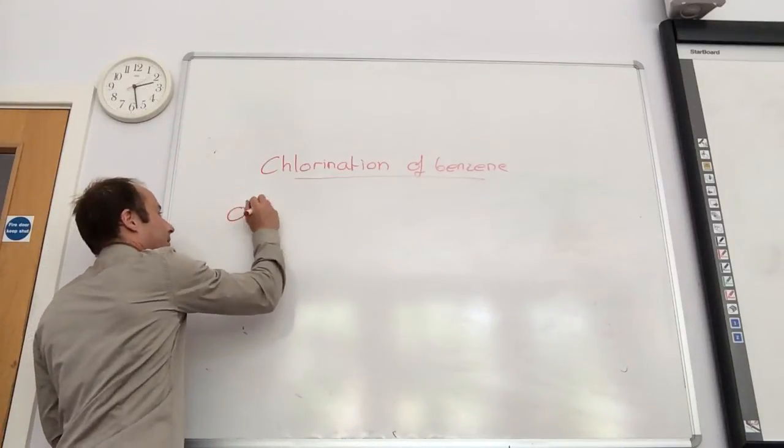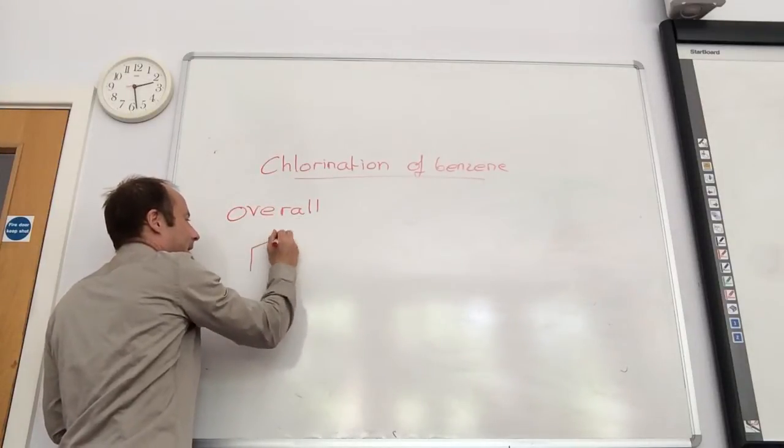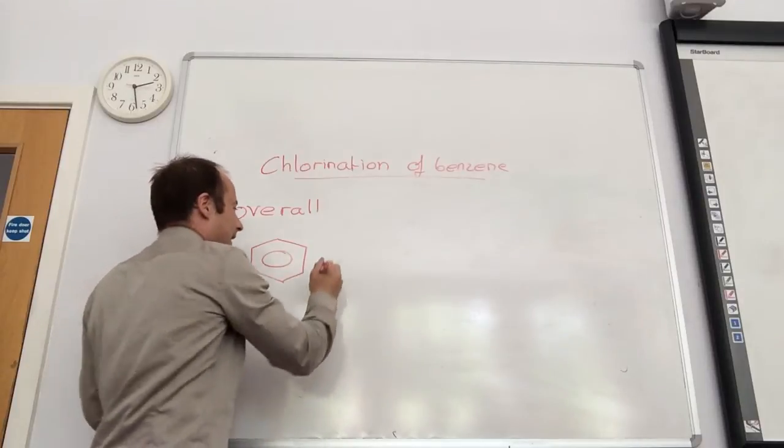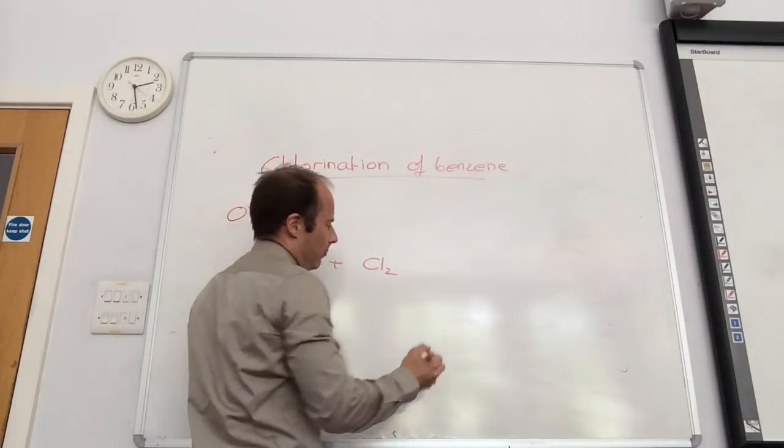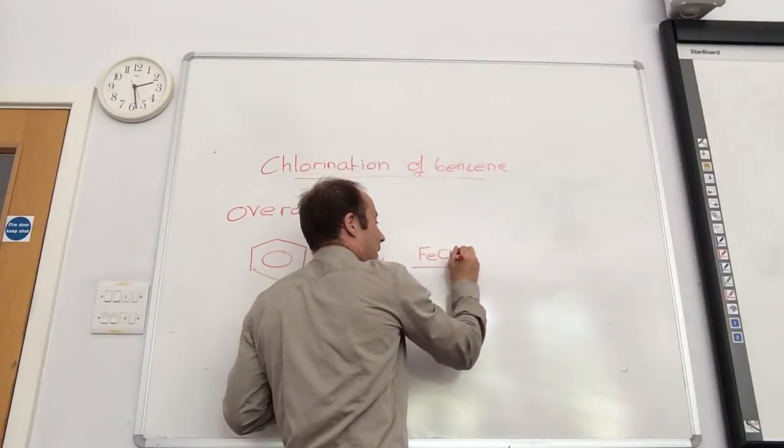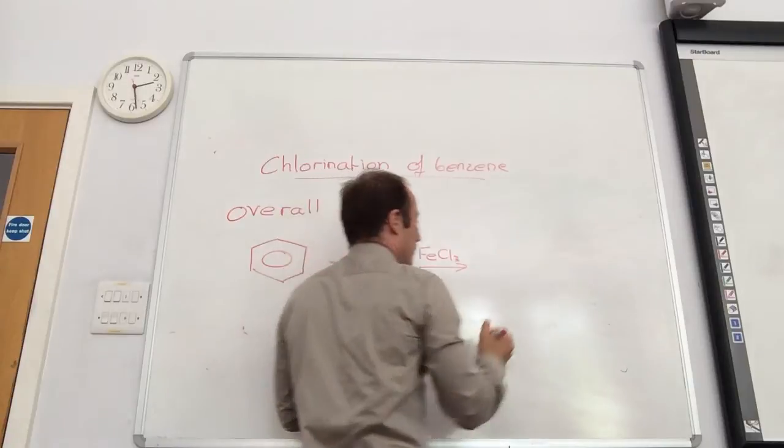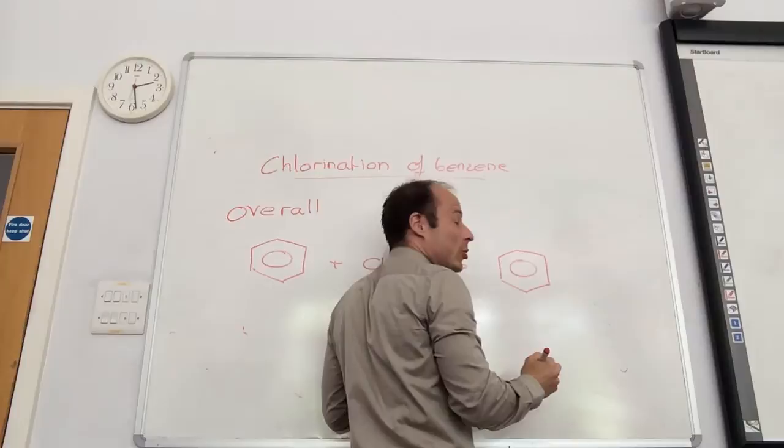Overall reaction is I take benzene and I add in chlorine. My catalyst is actually iron tri-chloride (FeCl3). Is this anything specific, or is it still electrophilic substitution? Still electrophilic substitution.